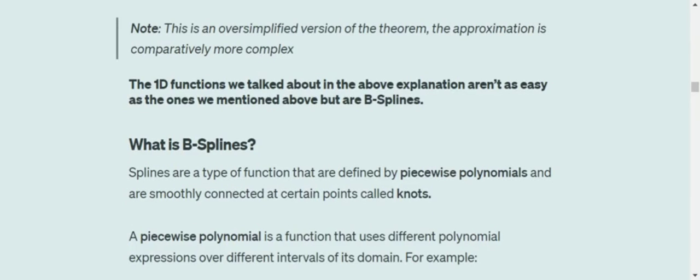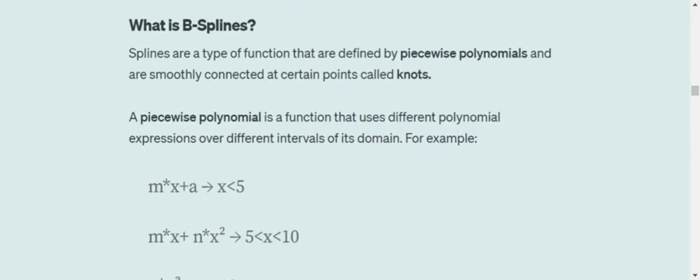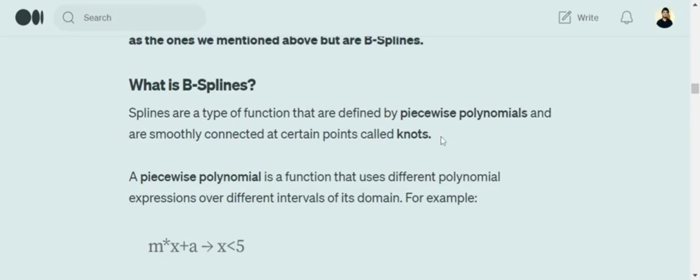The 1D functions that we showed in the example above aren't that easy. It was just for explanation purposes. But the functions that I use are called B-splines. So what is B-splines? B-splines are a special type of functions that are defined by piecewise polynomials and are connected at certain points called knots.